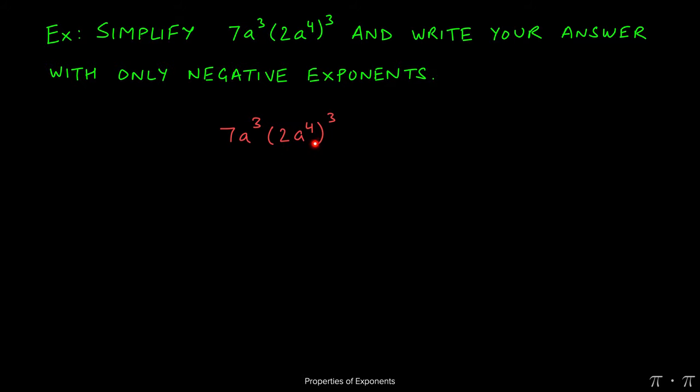So we start by expanding out the parentheses by using the product to a power rule. That allows us to apply the third power to both 2 and a to the fourth.